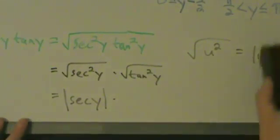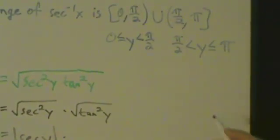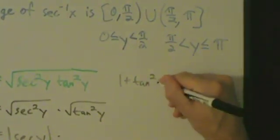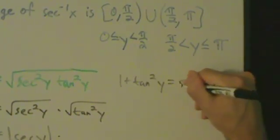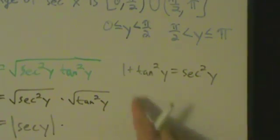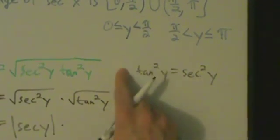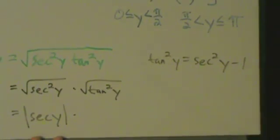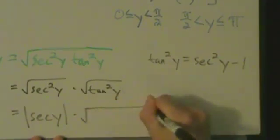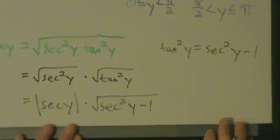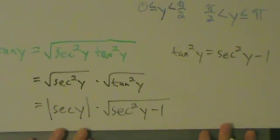For the square root of tangent squared y, we use the Pythagorean identity: 1 plus tangent squared y equals secant squared y. Subtracting 1 from both sides gives tangent squared y equals secant squared y minus 1. So the square root of tangent squared y becomes the square root of secant squared y minus 1.